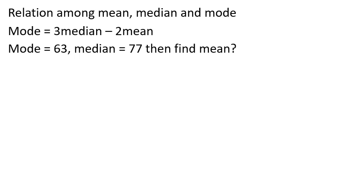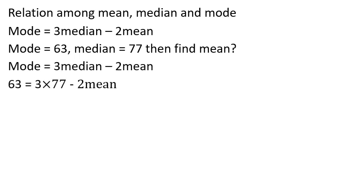Using the relation Mode = 3 × Median minus 2 × Mean: 63 = 3 × 77 minus 2 × Mean. So 63 = 231 minus 2 × Mean.